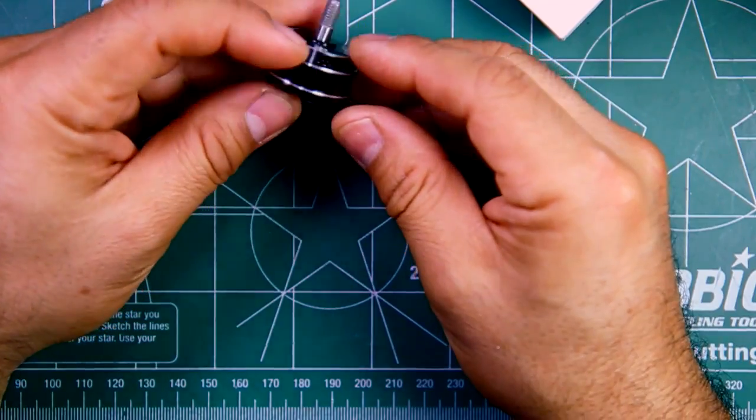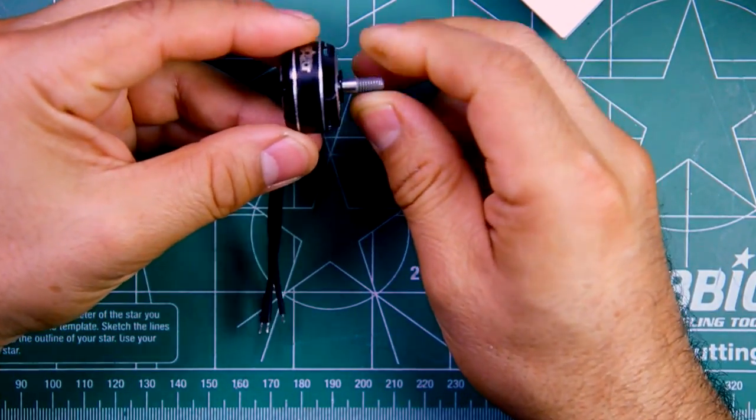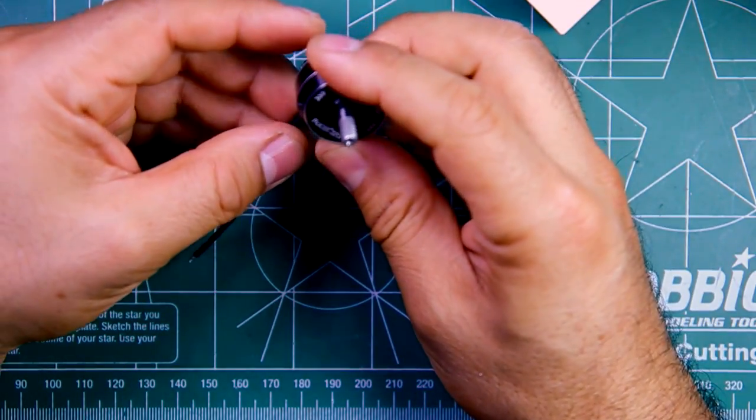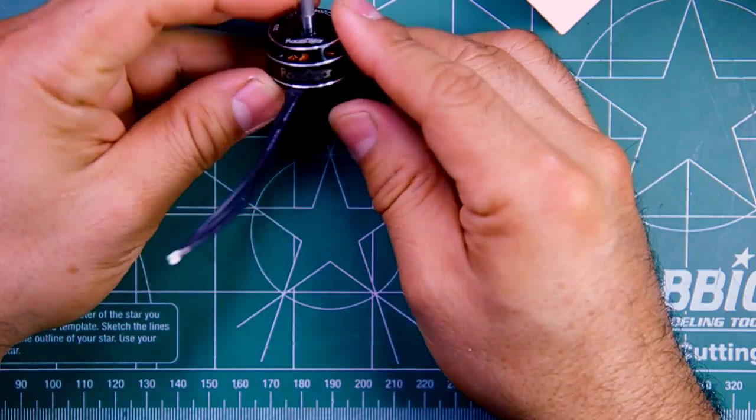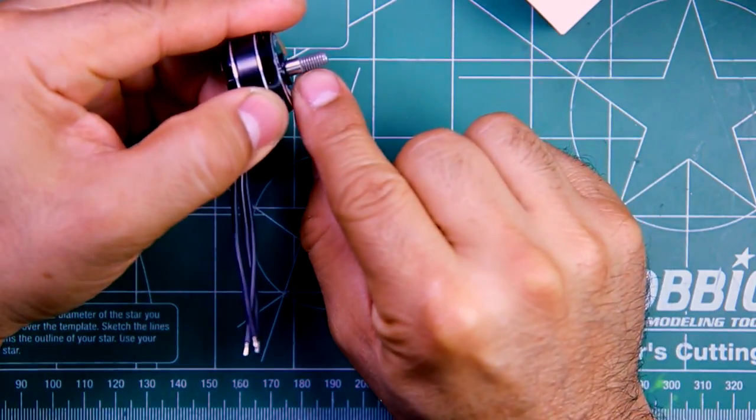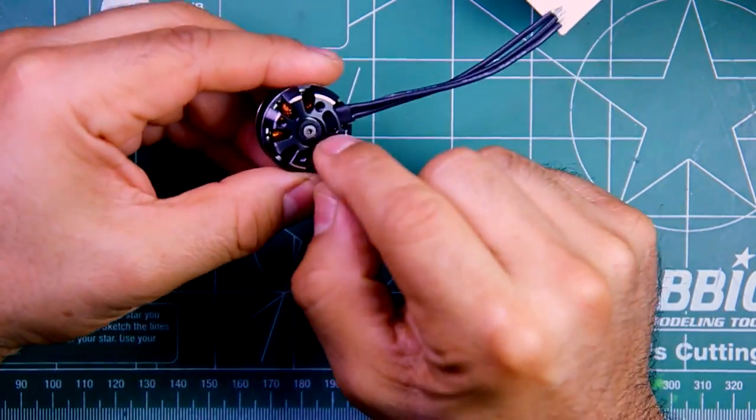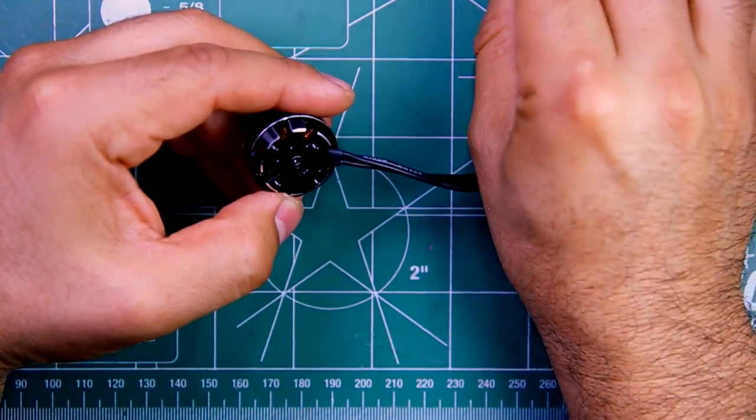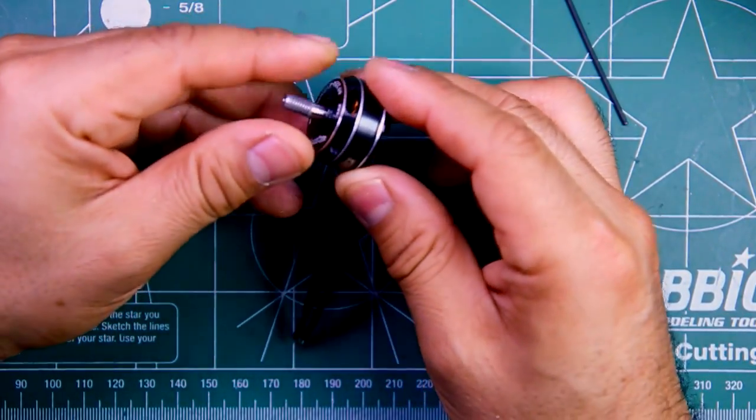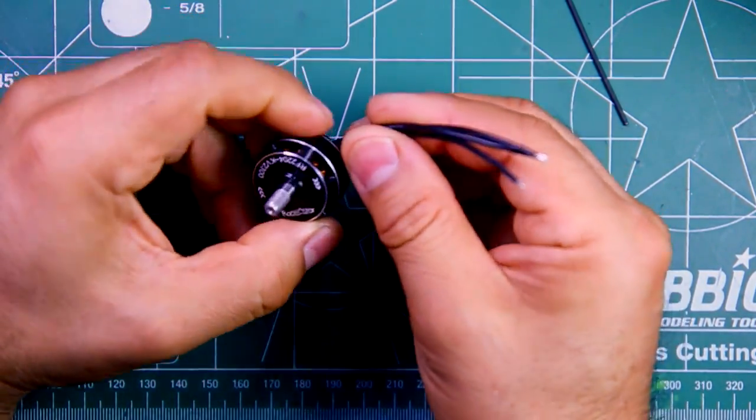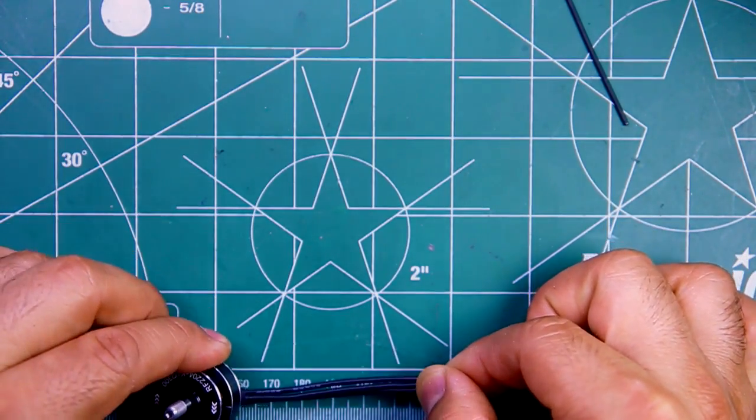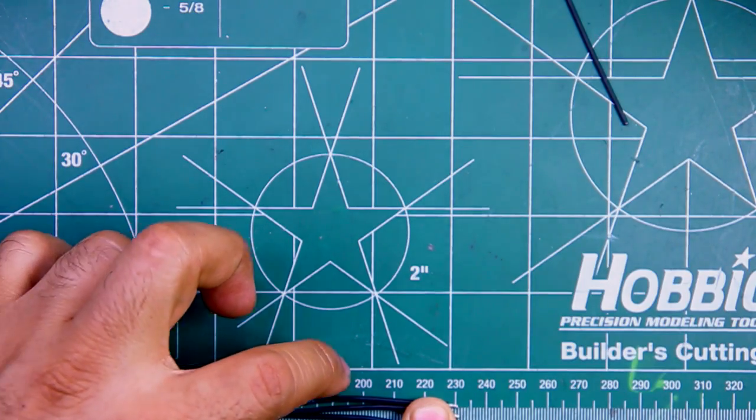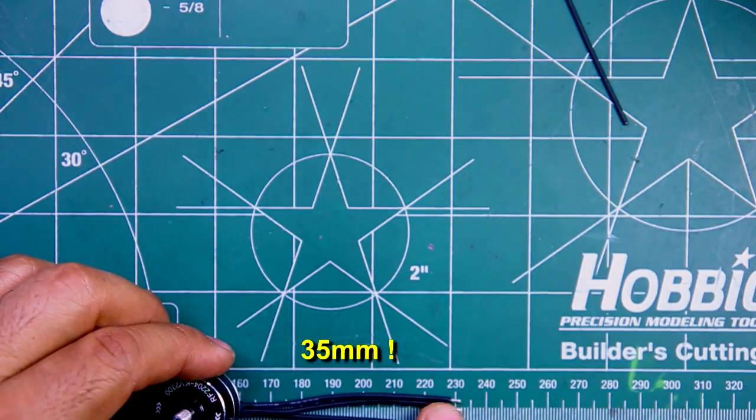Some things about the motor - it's actually very nicely built. I guess this is their premium line of the RacerStar motors. As you can see it has a steel shaft and it uses a hex nut for retaining the shaft. The length of the wires is about 60 millimeters or so.